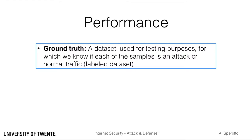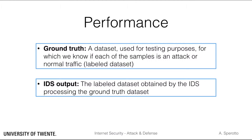A ground truth dataset is therefore a labeled dataset. Labeled datasets are quite rare in intrusion detection, since they mostly need to be manually labeled. They therefore require domain knowledge and time to be created, and one is often faced with a trade-off between how representative a dataset is and how complex it is to have an accurate labeling. We will call the ground truth samples malicious and benign samples. The second ingredient is the IDS output — a dataset labeled with the classification decision of the IDS, referred to as positive samples if the IDS labels a sample as an attack, and negative samples if it decides the sample carries normal traffic.